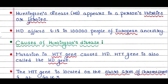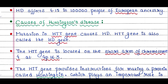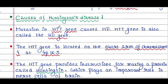Let's see some causes of Huntington's disease. Mutation in the HTT gene causes Huntington's disease. The HTT gene is also called the HD gene. It is located on the short arm of chromosome number 4 at 4p16.3. This 'p' indicates the short arm, and this is the site of the HTT gene, which is the culprit.